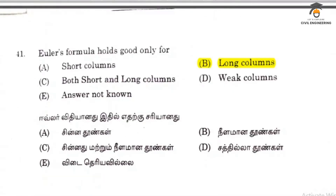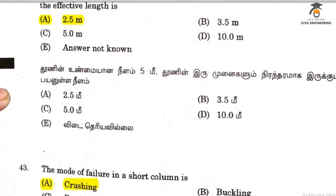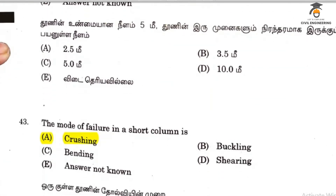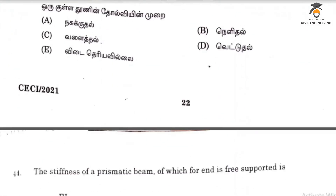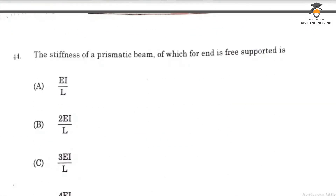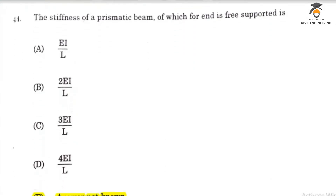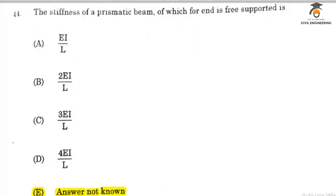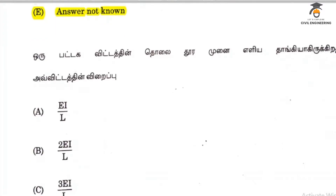Question 41: Long columns. Question 42: 2.5 meter. The mode of failure of a short column is crushing. This option is 0, so the answer is 0. The answer is not prone.